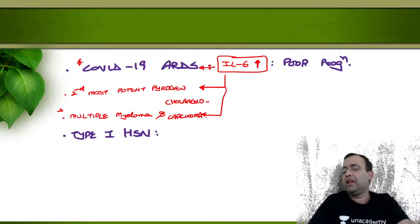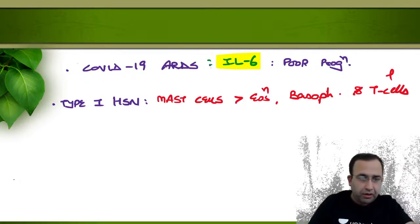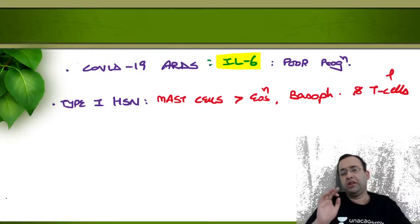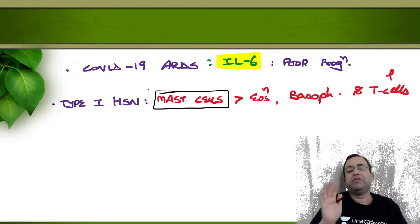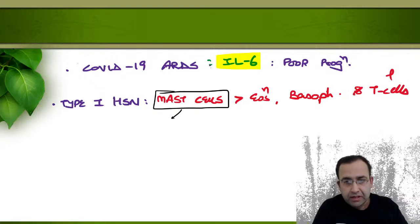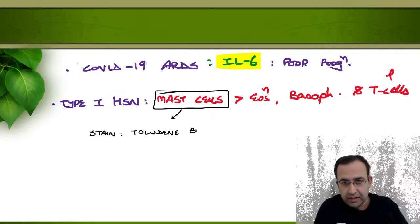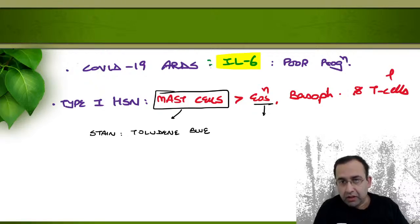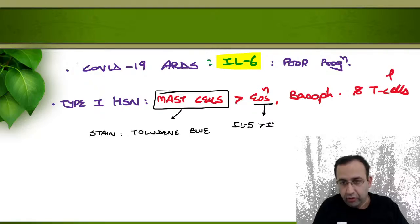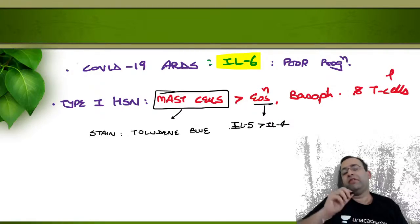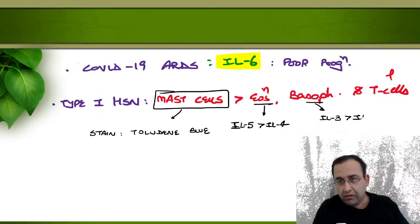The third topic: cells associated with type 1 hypersensitivity. The main cell is mast cells, followed by eosinophils, basophils, and T cells. The stain used for mast cells is toluidine blue. The most potent activator of eosinophils is interleukin-5, followed by interleukin-4.